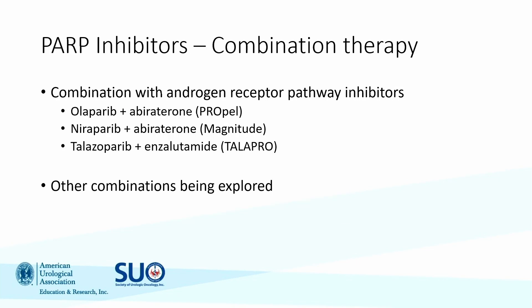The combination studies I'll go through are PROPEL — olaparib and abiraterone — MAGNITUDE — niraparib and abiraterone — and TALAPRO — talazoparib and enzalutamide. There are other combinations being explored, and also earlier in the disease course, which is a common theme in advanced prostate cancer where agents utilized in end-stage settings move progressively earlier.